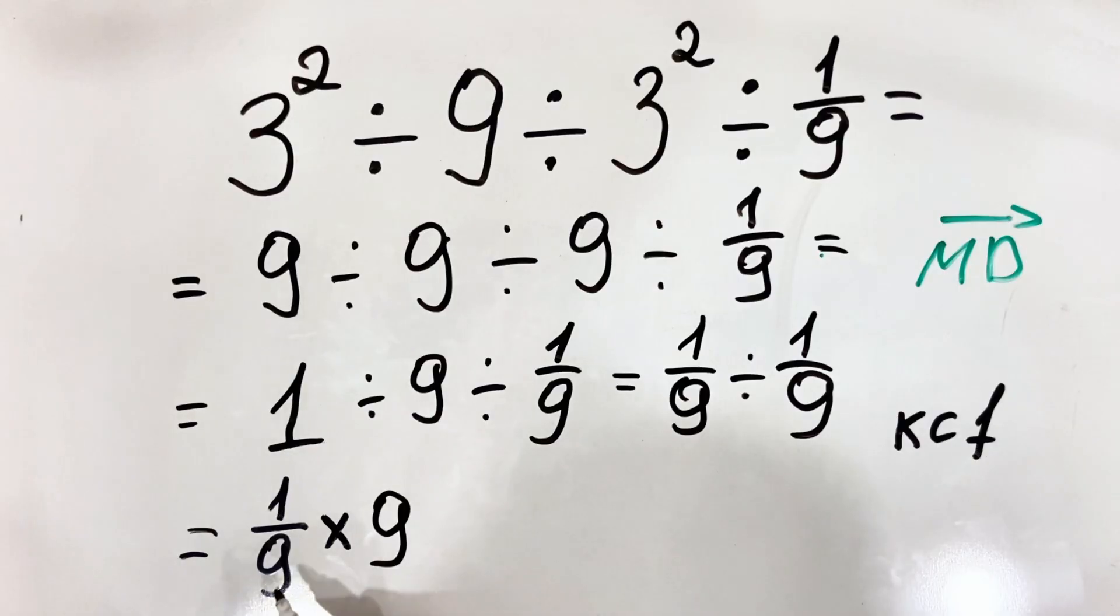So now what we have? We have 1 over 9 multiplied by 9. We simplify by 9 and the result is 1.